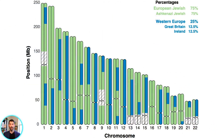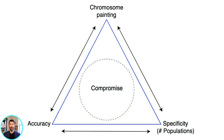Here's a more concrete example. A hypothetical person has three Ashkenazi Jewish grandparents, and the fourth grandparent is half British and half Irish. The chromosome painting shows only two colors — Ashkenazi and West Europe — but the percentages break that down further into British and Irish. This is how we include a chromosome painting without sacrificing any accuracy or population specificity.